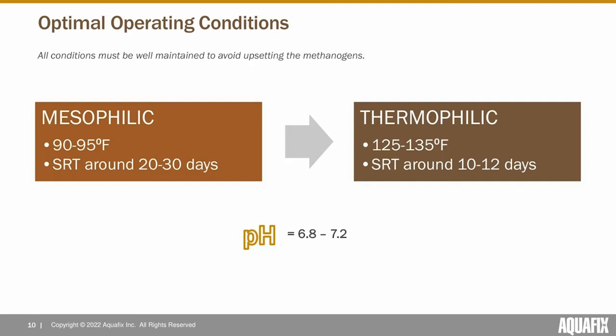There are a couple different types of anaerobic digesters. Mesophilic digesters run at about 90 to 95 degrees Fahrenheit, though sometimes up to 100 or 101. You want to avoid 98 degrees because that will make pathogens more likely to thrive. Thermophilic digesters operate at a warmer range like 125 to 135 Fahrenheit and require about a third of the time to digest the sludge effectively. All digesters operate best at a pH range of about 6.8 to 7.2, with 7 to 7.2 considered optimal.